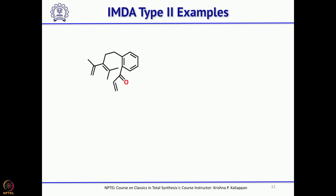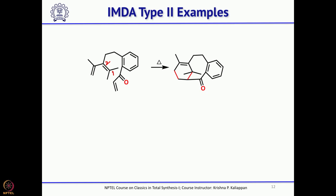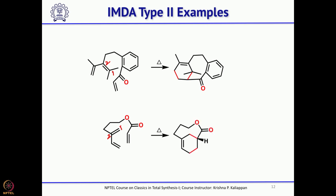Whereas type 2 is where the dienophile is attached to carbon number 2 of the diene. That gives a bridged bicyclic system. This is a classical example where the bicyclic system is formed using an intramolecular type 2 Diels-Alder reaction. Again in this example, at carbon number 2 of the diene the dienophile is attached, giving the bridged bicyclic system.